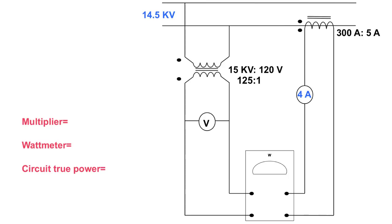So here we have the potential transformer has a ratio of 125 to 1 and the current transformer has a ratio of 60 to 1. Now we have our ratios that we can use to determine what our multiplier is, which is this guy right there.